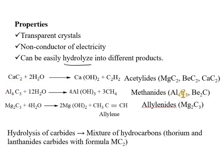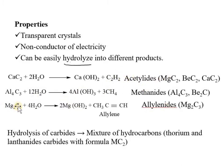Aluminum carbide and beryllium carbide, upon hydrolysis, generate methane, so they are called methanides. Carbides that generate acetylene on hydrolysis are called acetylides, and carbides that generate allylene on hydrolysis are called allylenides — for example, magnesium carbide (Mg₂C) which is a second-group element.